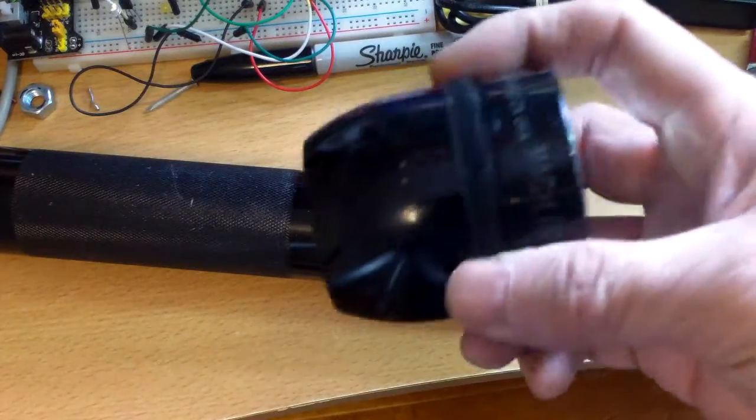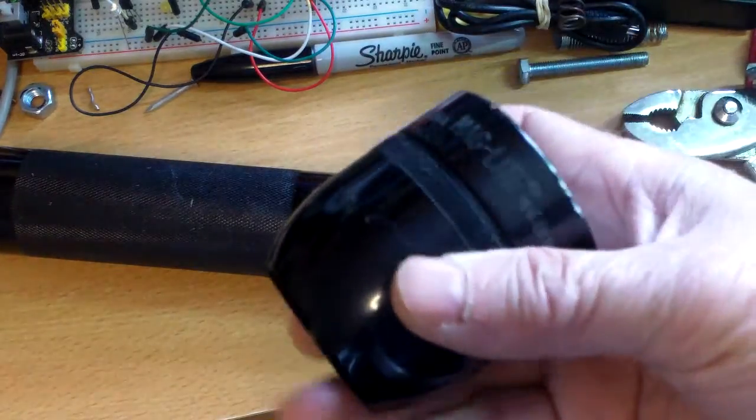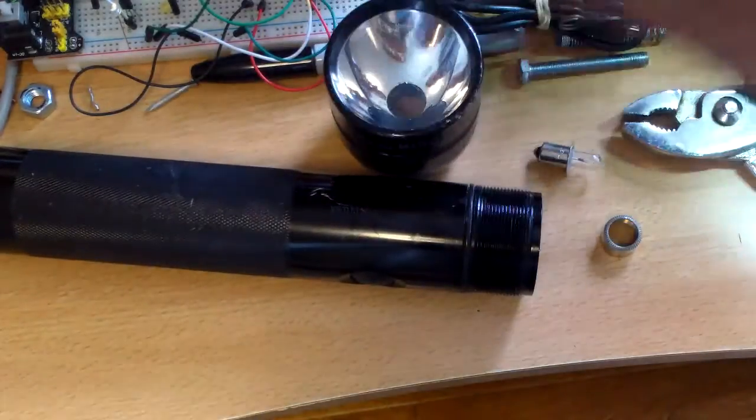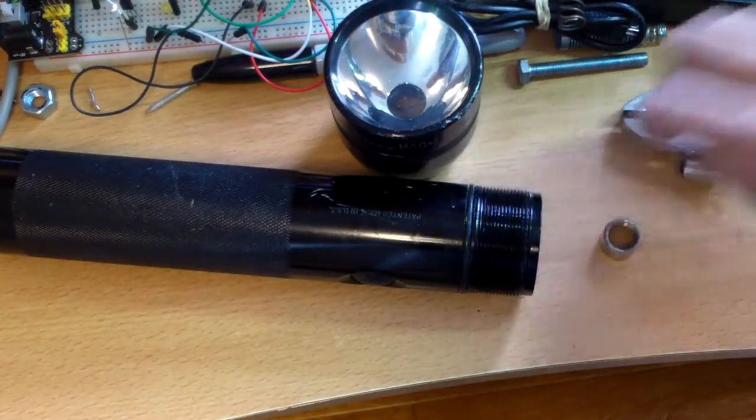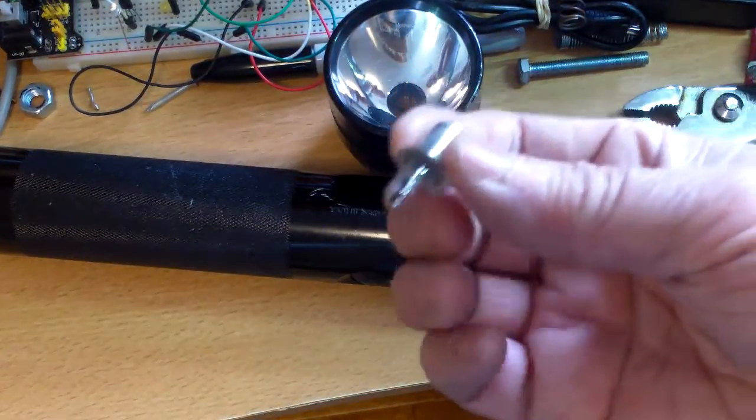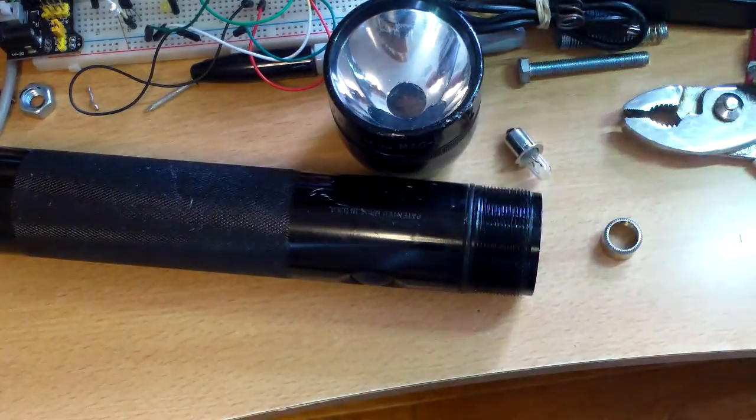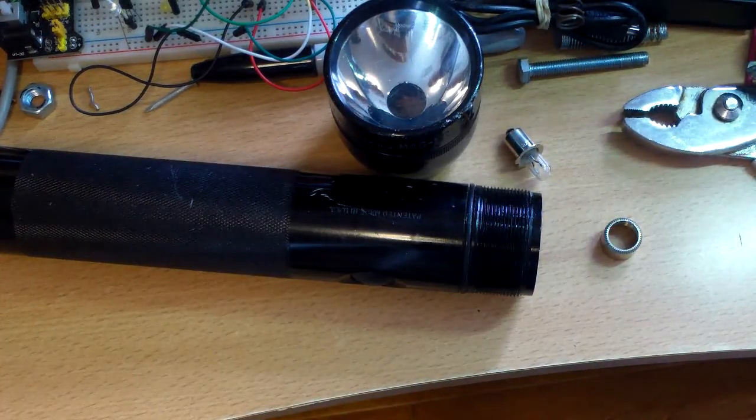I have this 2D cell Maglite from many years ago, probably at least 20 years, and it uses the old incandescent bulb. Of course, it can't really compare to the LED flashlights that you have now, so it's time for an upgrade.